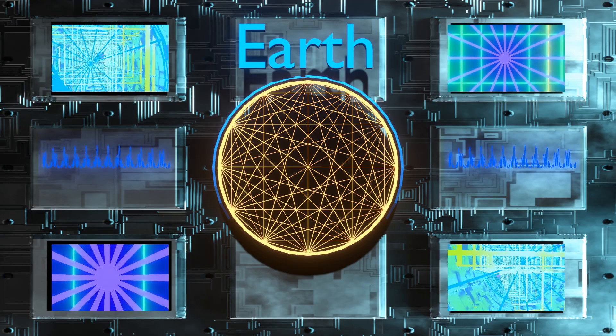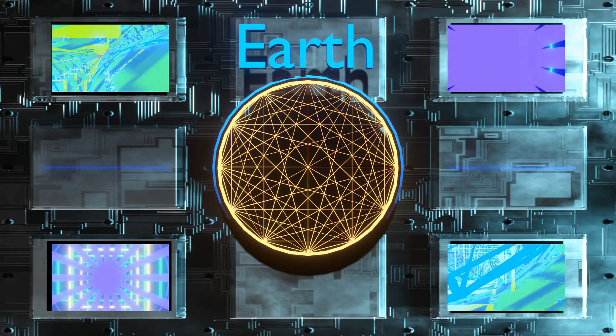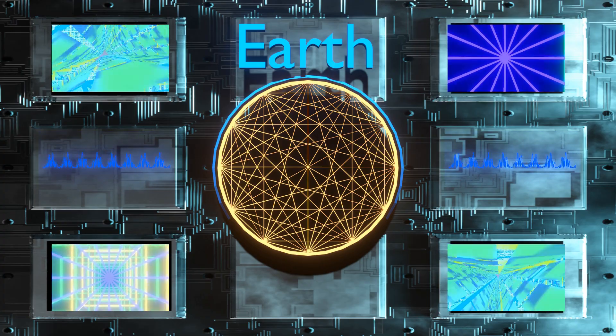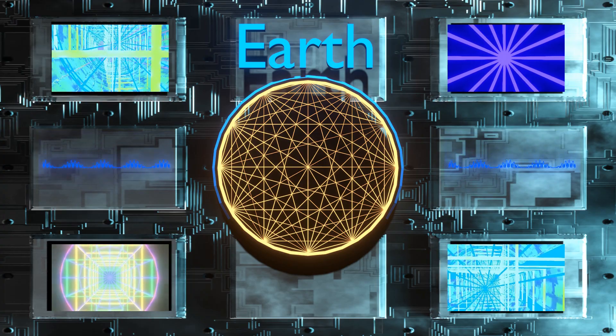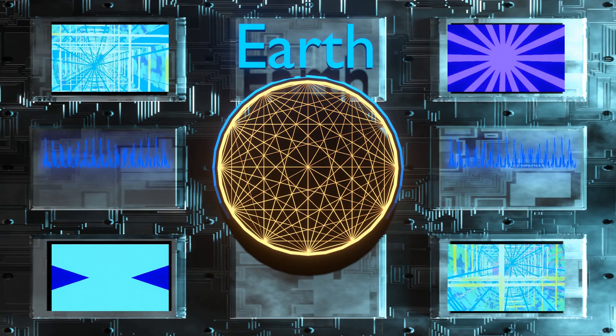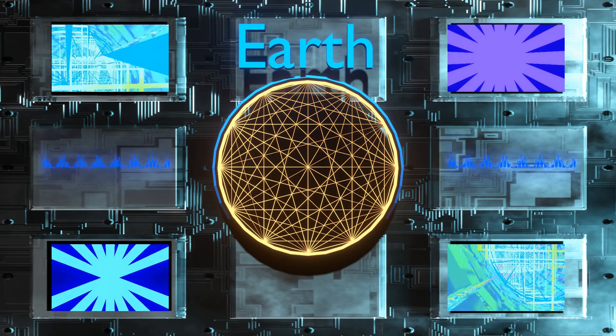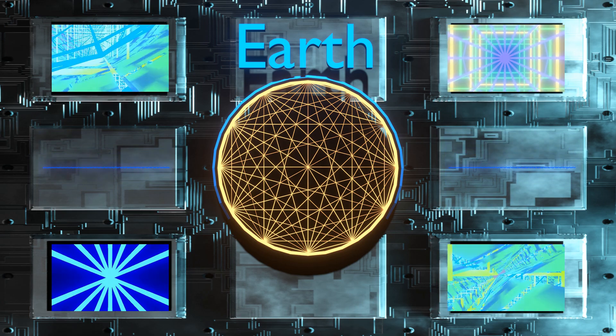The Samudra Manthan myth is a powerful symbol of creation arising from the interplay of opposing forces. The cosmic ocean represents the undifferentiated primordial state, while the act of churning symbolizes the dynamic process through which order and structure emerge. This narrative suggests that creation is not a single act, but an ongoing process involving tension, conflict, and resolution.